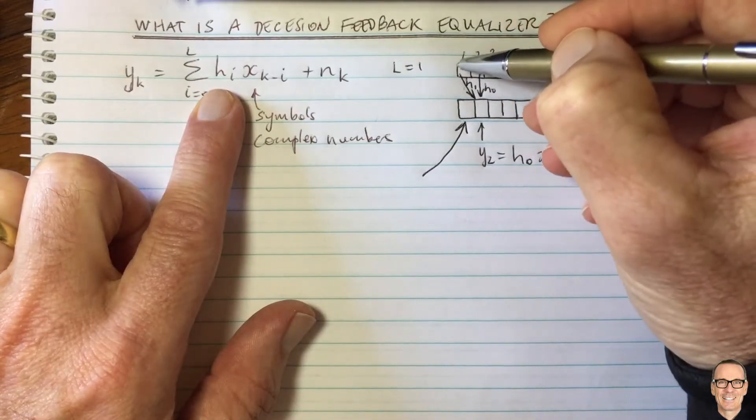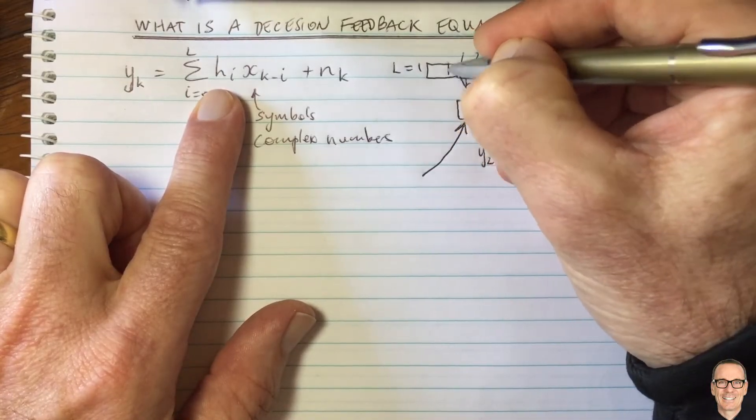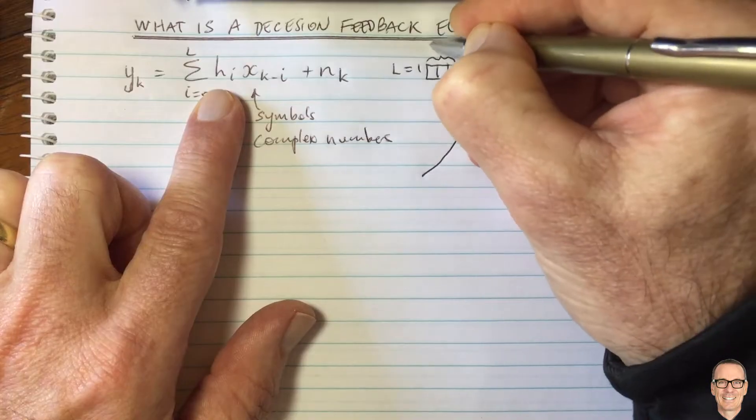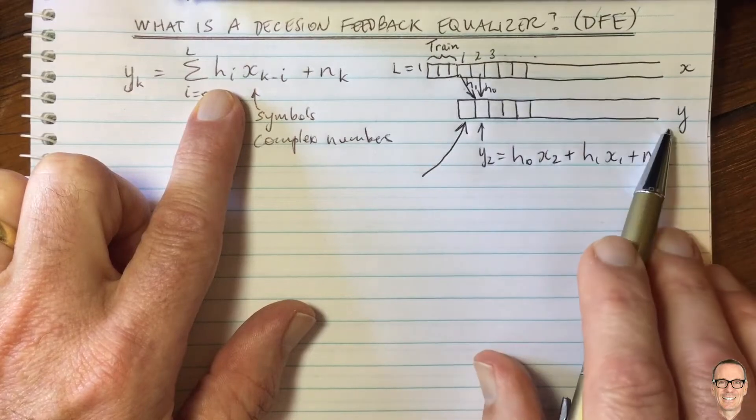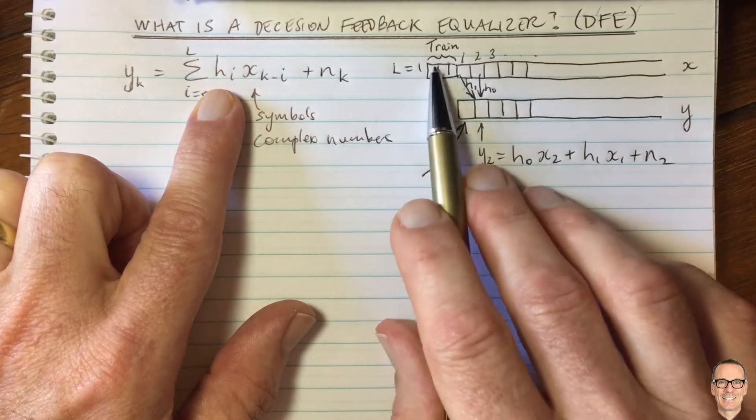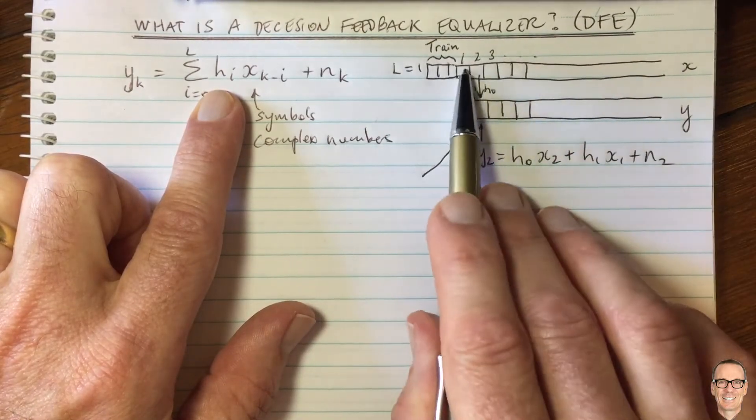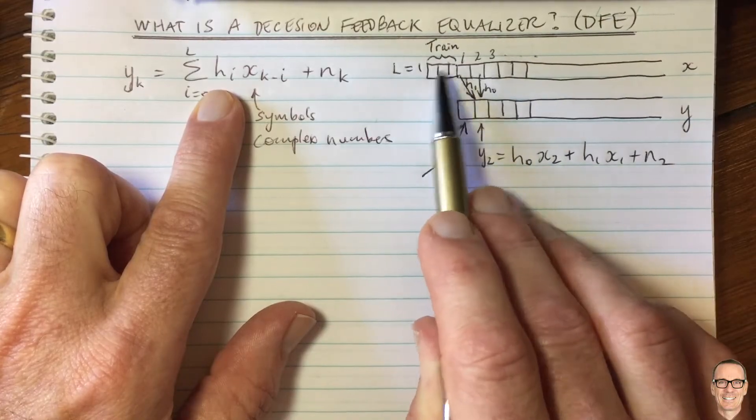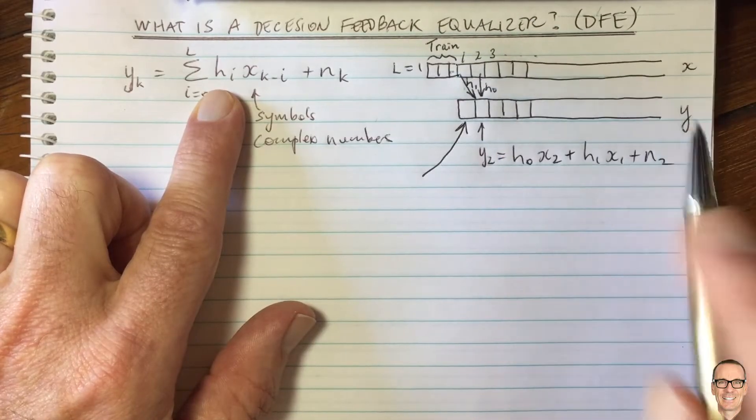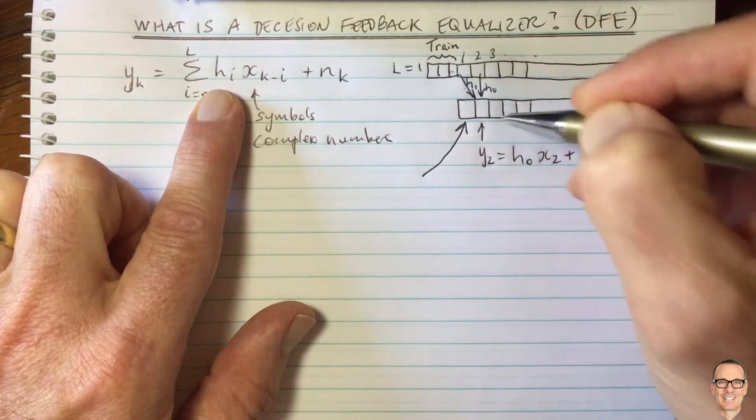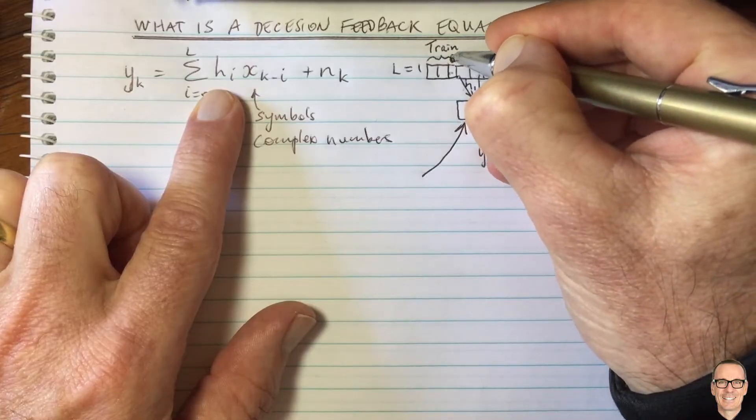Okay, and let's look at the example where there's a training period before the equalization starts. So this is a training period here and I'll put up here, I'll just write train. So these are known data symbols that the receiver knows about. Okay, so the receiver is expecting to get this training first before it gets real data being sent to it, which it doesn't know and it has to try to work out. But in the training sequence, it does know this data. So that symbol there is known to the receiver. And this symbol there is x naught.